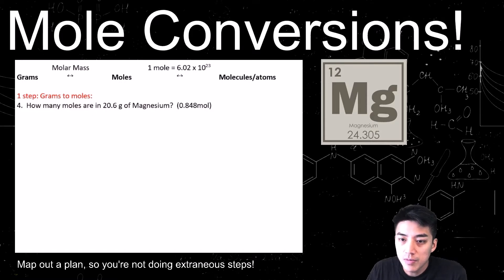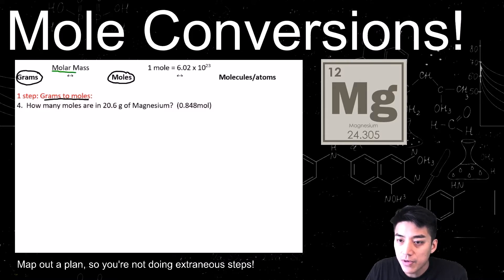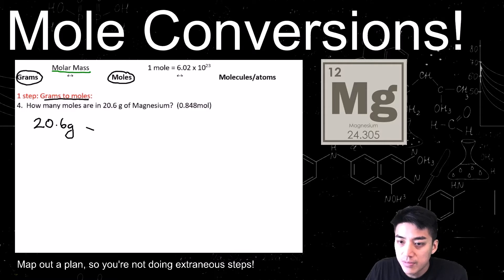Once again, let's see where this problem is headed. This is a one-step grams to moles problem. Using the graphic at the top, I know I'm going from grams to moles, which involves molar mass somewhere in the problem. Let's start by writing down 20.6 grams of magnesium. Times sign, draw a line. Put grams below the line, put moles on top — abbreviated MOL.